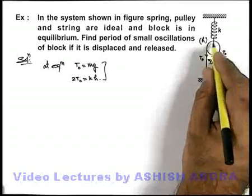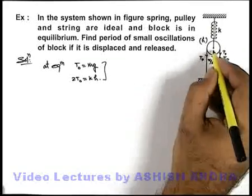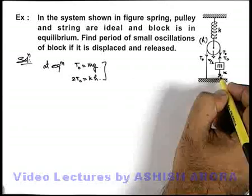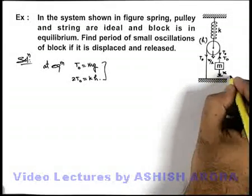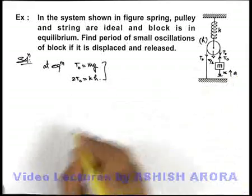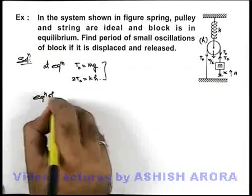Obviously if the block is displaced by x, the pulley will be displaced down by a distance x/2 as string is there on both sides of the pulley. So on displacing pulley by x/2, this block will move down by x. Obviously at this situation the block will have an acceleration in upward direction, so if we write equation of motion.